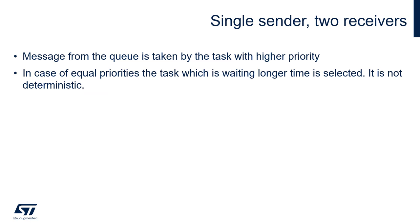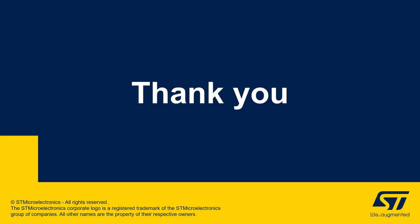Let's consider the situation where we have a single sender and two receivers. We should remember that the message from the queue is taken by the task with the highest priority. In case of equal priorities, the task which has been waiting longer will be selected by the scheduler — thus it is not deterministic. Even if a higher priority task is in a blocked state waiting for access to the queue, it will be woken up immediately by the kernel when the queue contains new data. Only if a higher priority task is in suspend mode will it not be taken into consideration by the scheduler. Thank you for watching this video.